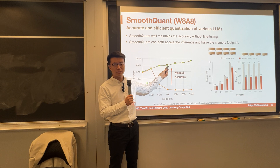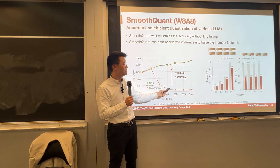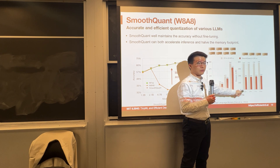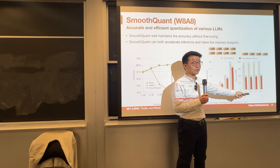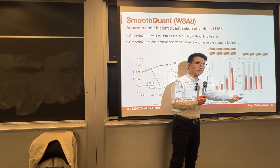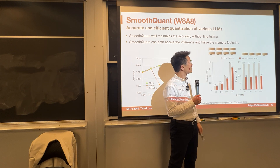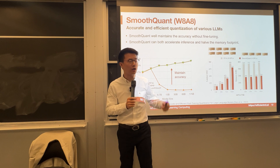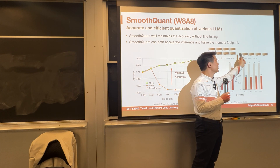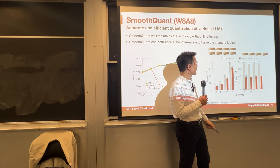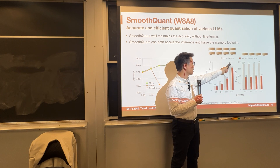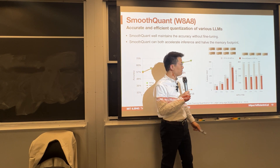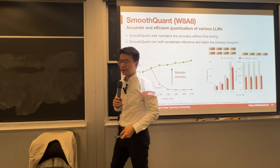Now we can match the accuracy — previously we lost accuracy when the model exceeded 6.7 billion parameters, but now accuracy is recovered. Memory is reduced by half: serving the OPT-175B model used to require eight A100 GPUs, now only four are needed — reducing GPU count by half. Each GPU costs around $20K, so you immediately save $80K. Latency is even faster since everything is quantized to INT8 rather than FP16 and there's less communication.